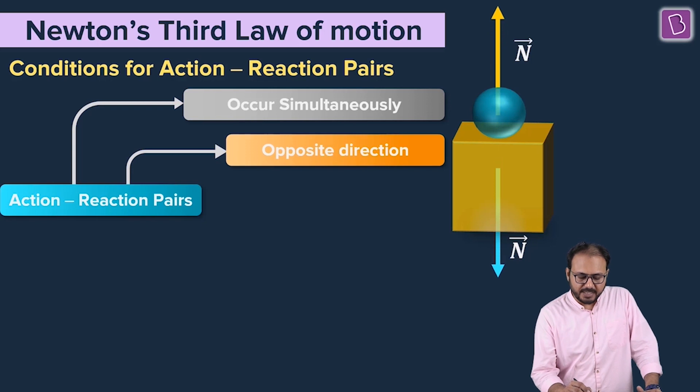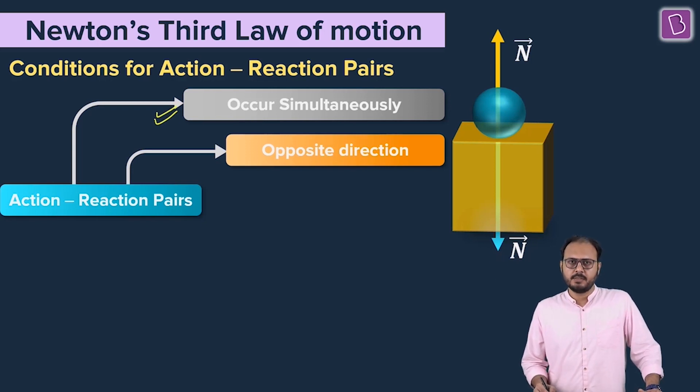Opposite direction. So the first property is occur simultaneously. So reaction is not the response to action. It's action 1, action 2 at the same time. Second property, opposite direction. Can you see the arrows pointing in opposite directions?